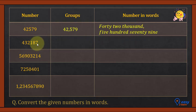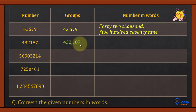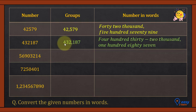Now divide this number into groups. First three digits — one, two, three — place a comma. There are two groups: the hundreds group and the thousands group. So the answer is: four hundred thirty-two thousand one hundred eighty-seven.